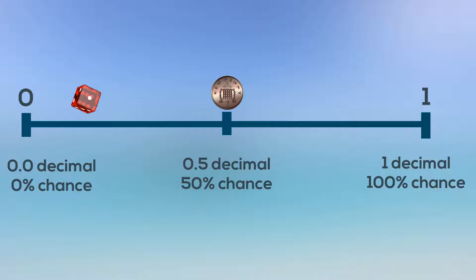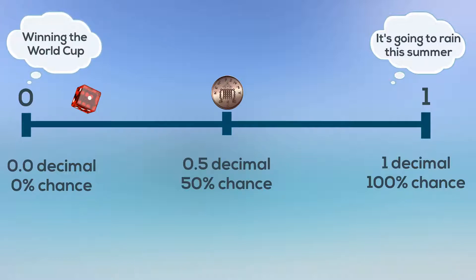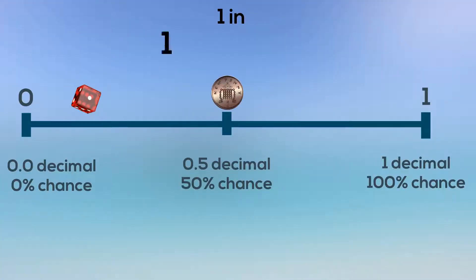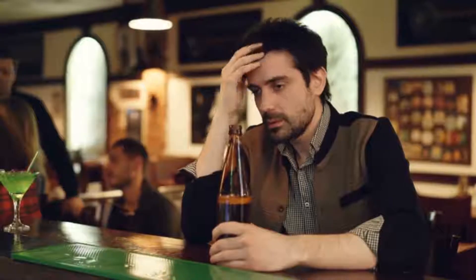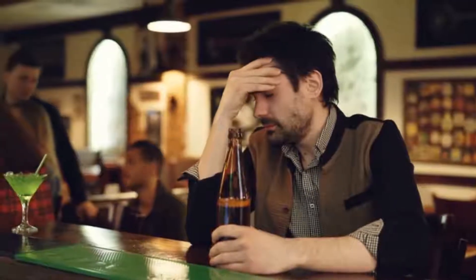We can then use our scale to represent all sorts of things, from the likely to the very unlikely. We can even put things on it which are staggeringly unlikely, like winning the lottery — something so unlikely, at 1 in 13,983,816, it's effectively right next to impossible. Someone is going to win it, but it's not going to be you. Nor me. Guess I'm going to have to start saving up for that car.